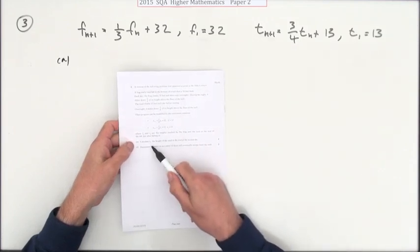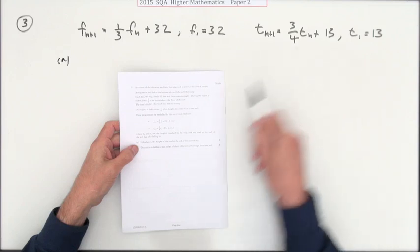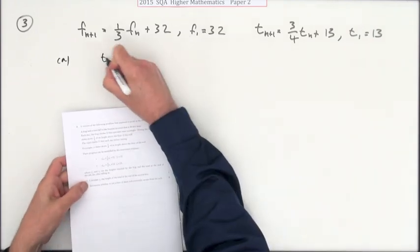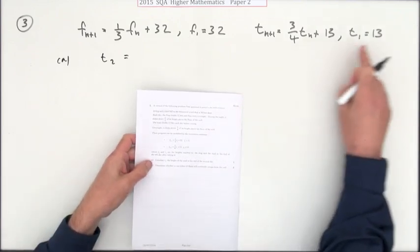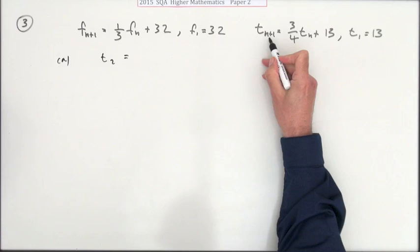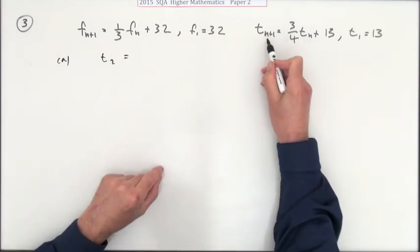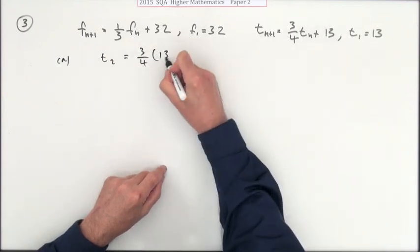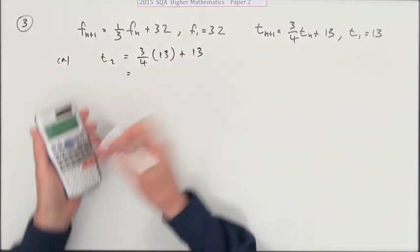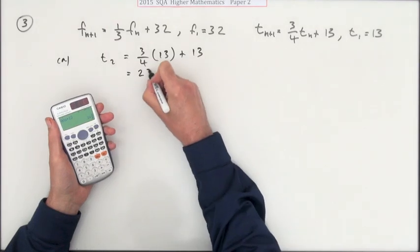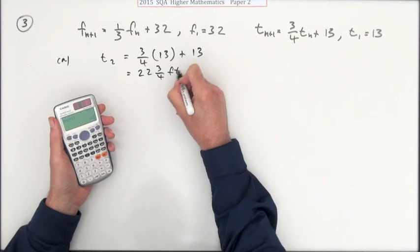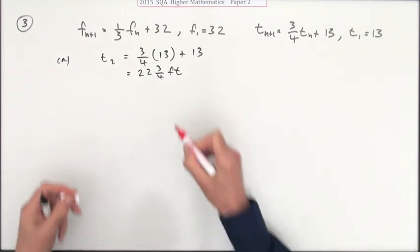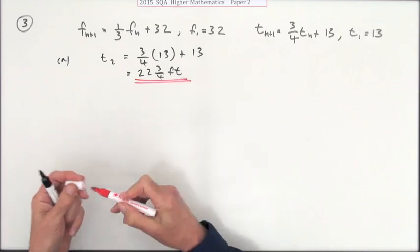In part A, what's the height t2, the toad's height at the end of the second day? Well here's the height at the end of the first day, and this says to get the height at the end of the following day you do three quarters of its height the previous day, which is 13, and then add on 13. Just typing that in gives you 22 and three quarters feet. That seems more appropriate rather than going for a decimal like 22.75. That's how far the toad got.